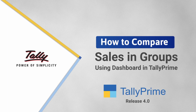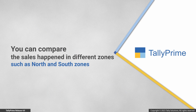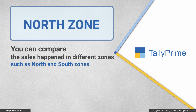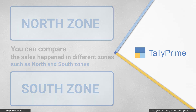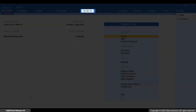In this video you will understand how to compare sales in various groups using the dashboard in TallyPrime. In your business you might be maintaining groups or even ledgers to gauge the business in different zones, such as north and south. In such a case you can easily compare the sales trends for the groups.